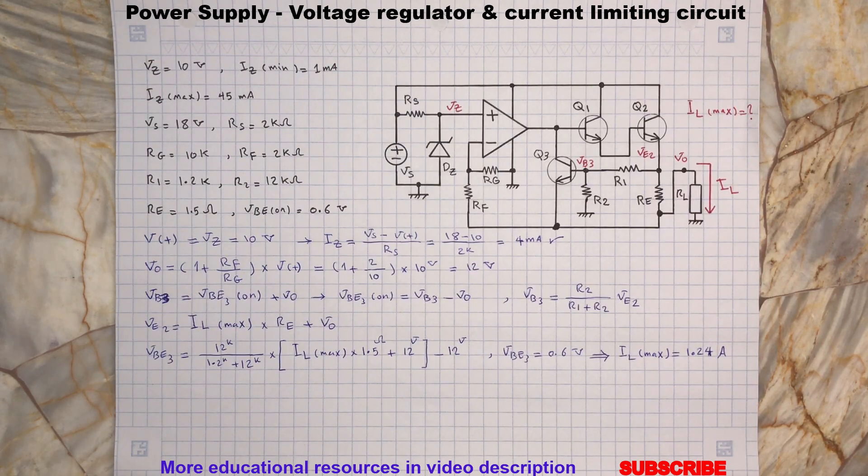Thank you and now back to the video. At the short circuit condition we assume there is a zero resistance between output terminal and ground. This means output voltage becomes 0V.